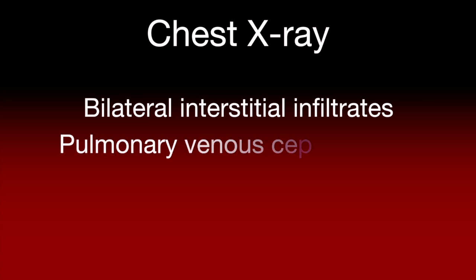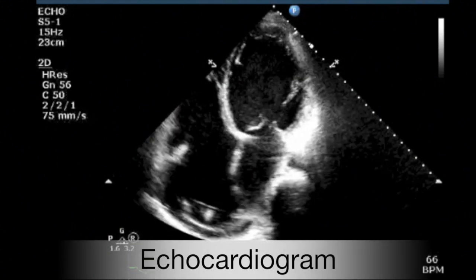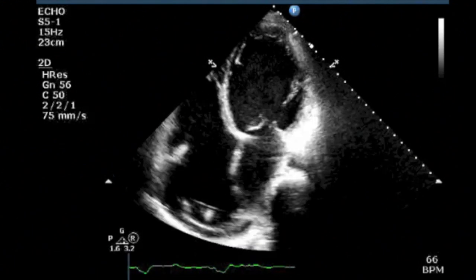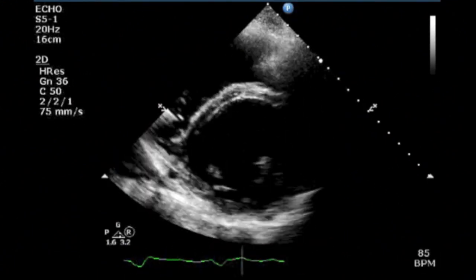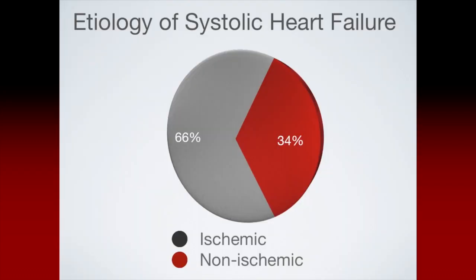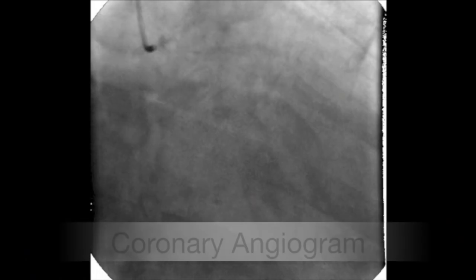A chest x-ray is a standard evaluation for a patient with shortness of breath. Chest x-ray findings in heart failure include bilateral interstitial infiltrates, pulmonary venous cephalization, curly B lines or fluid in the interlobular septa of the lung, cardiomegaly, or a pleural effusion. An echocardiogram is a very helpful test in a patient with suspected heart failure. Echocardiography gives a wealth of information on cardiac structure and function, including left ventricular size, left ventricular ejection fraction, an evaluation for valvular disease, and much more. Once the diagnosis of heart failure has been made, attention should then be paid to establishing the etiology of the cardiomyopathy. Given the frequency of ischemic cardiac disease, this often begins with an assessment for ischemia with either nuclear perfusion testing or coronary angiography.